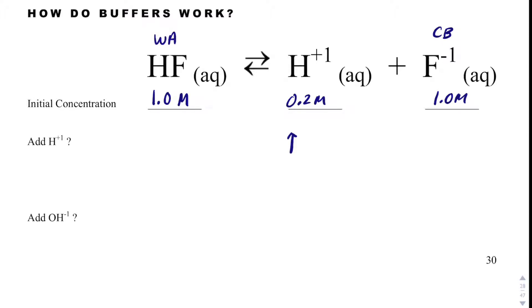If I add H plus, according to Le Chatelier's principle, that will cause a reaction to shift left. And when that shifts left, the added H plus ends up reacting, and so it doesn't stick around. The added H plus reacts with all these F minus ions that are around, and it shifts left. So what that means is all of the extra added H plus react with excess fluoride ions. So there is no net gain or loss of H plus.